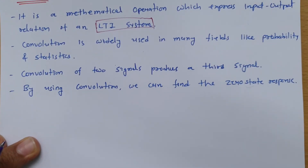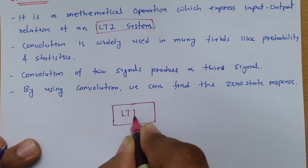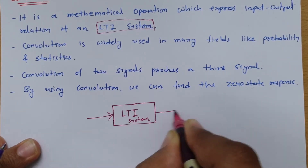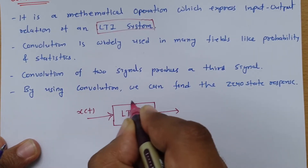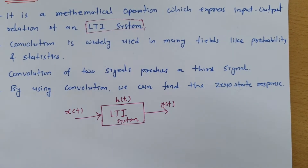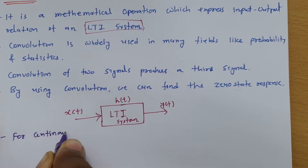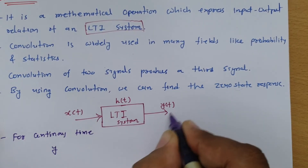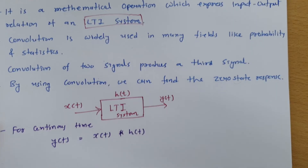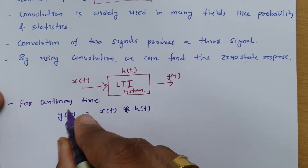Now let us understand how we apply convolution. For example, if we have a system — and as I mentioned, the system must be a linear time invariant system — and we give it an input X(t), and the system's impulse response is H(t), it produces output Y(t). For continuous-time signals, convolution generates the output, so Y(t) equals the convolution of input signal X(t) with impulse response H(t). The symbol for convolution is a star (*).